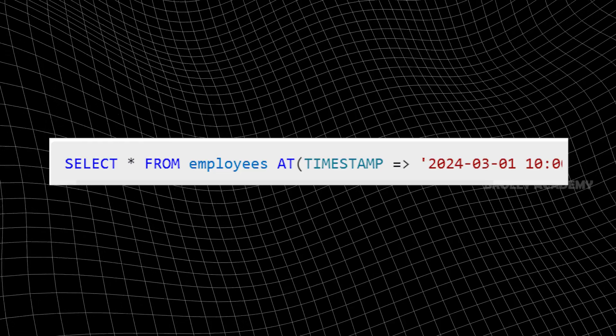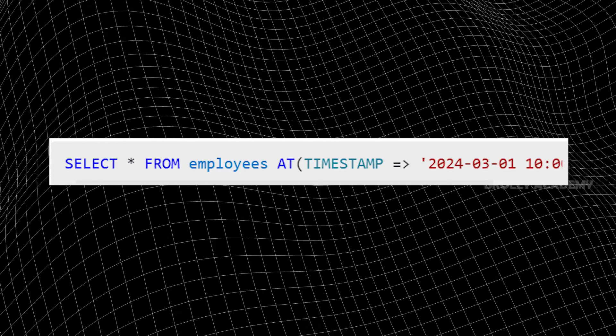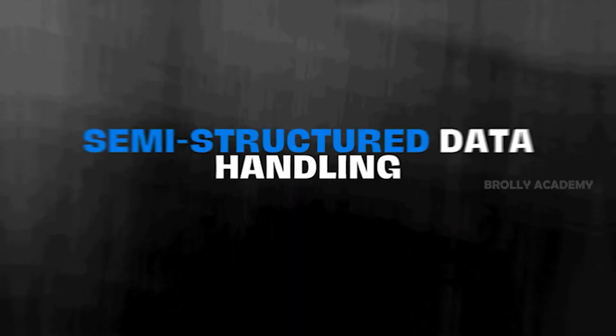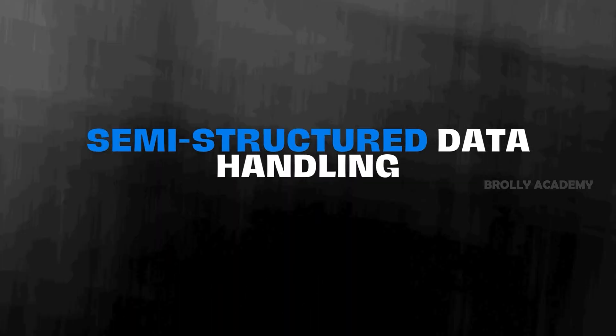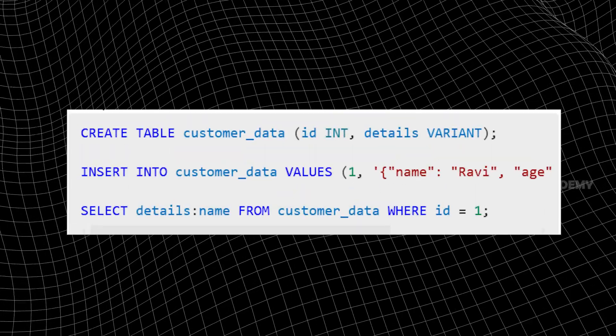History tagging and semi-structured data handling: Regular databases store JSON and XML as custom types, but Snowflake makes it easy. Example code shows how to work with JSON data using direct store and query.